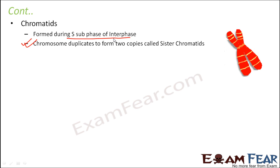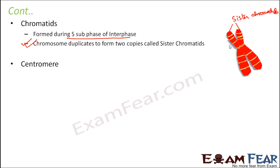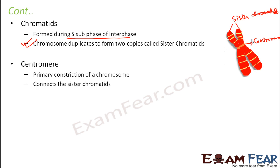Once the chromosome duplicates, instead of having just one strand you have two strands, and these two strands are known as sister chromatids. The two strands are connected at the centromere, which is the primary constriction of the chromosome. During the course of cell division, the sister chromatids separate, and one sister chromatid goes to each cell. That is the basic concept of why the chromosome gets duplicated and why sister chromatids are formed. So the basic terms as far as chromosome is concerned are: chromatin, chromosome, and chromatid.